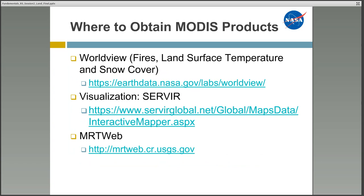Here are some additional places to find MODIS data that provide more visualization tools. First is Worldview, a tool that provides the capability to interactively browse and download global satellite imagery. Currently there are limited MODIS land products available — you can find fires, land surface temperature, and snow cover on that website. SERVIIR, a joint NASA-USAID capacity building program, has a global visualization mapper that enables you to visualize MODIS and other data globally. MRT Web will be discussed next.